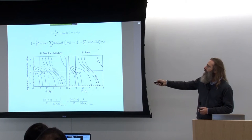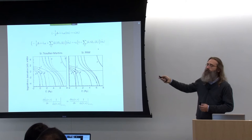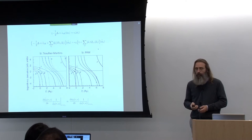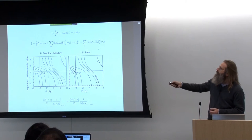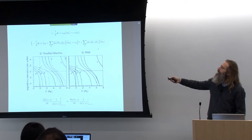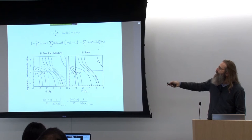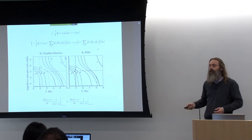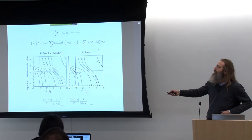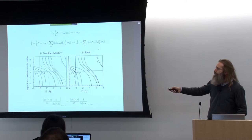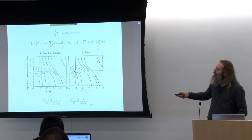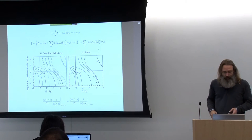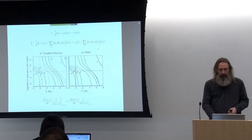That larger energy range is normally indicative for transferability. With Trullier-Martin pseudopotentials, you will be able to represent the atomic problem almost exactly — it will have the same eigenvalues in the pseudopotential description as in the all-electron one. But as soon as you put that into a chemical environment, the fact that you do not represent scattering properties as truly will start to show up. The PAW method, because scattering properties are reproduced over such a large energy range, helps in terms of transferability.